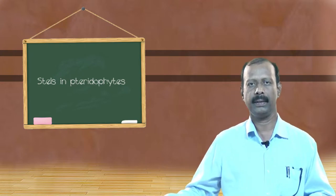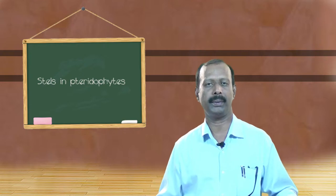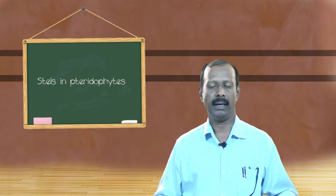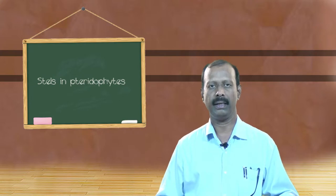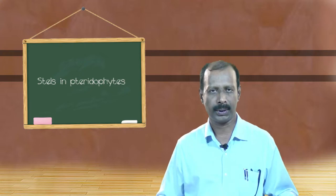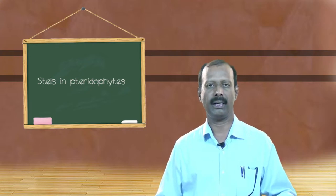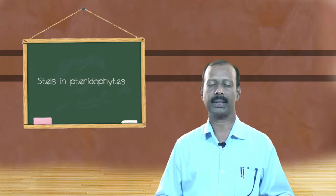In the case of pteridophytes, we can see the primitive type of steles, and depending upon the nature of the stele, we can see three prime types. The first one is called protostele, second one siphonostele, and the third one dictyostele.